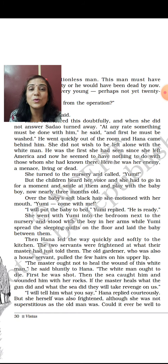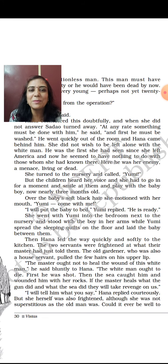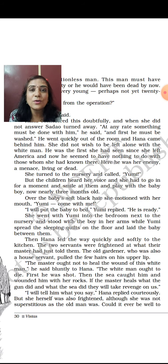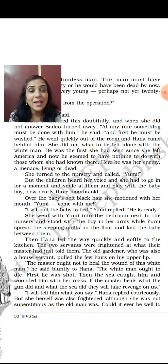This can be asked as a two-mark question: what was the reaction of the servants? She turned to the nursery and called Yumi, but the children heard her voice and she had to go in for a moment to smile at them and play with the baby boy, nearly three months old. She motioned with her mouth: 'Yumi, come with me.' Then Hana led the way quickly and softly to the kitchen. The two servants — the cook and gardener — were frightened at what the master had told them. The old gardener, who had been there since Sadao's father's time, pulled the few hairs on his upper lip, meaning he raised an objection.